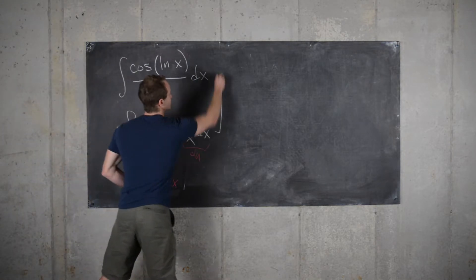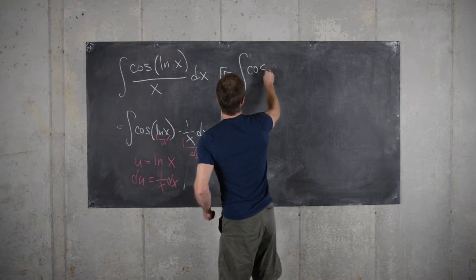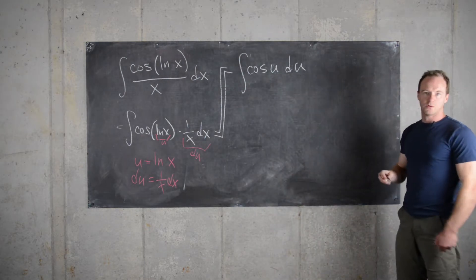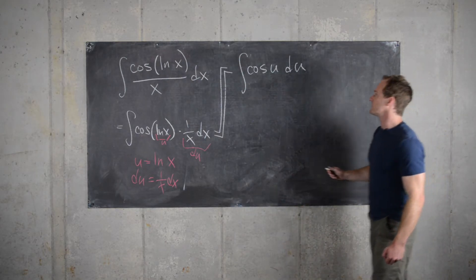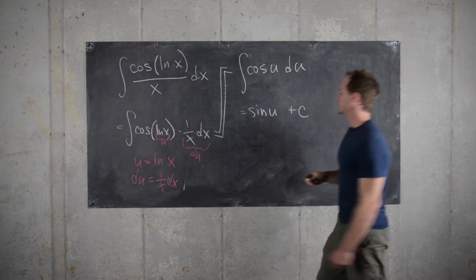So now making that substitution, we transform the integral into cosine of u du, which is a simple antiderivative. So that gives us sine of u plus our constant of integration.